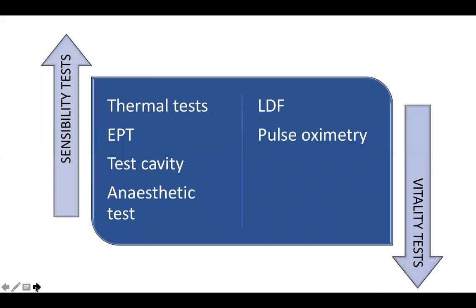To assess the status of the pulp, we use different types of tests, categorized as sensibility tests and vitality tests. Sensibility tests assess the status of the nerve fibers within the pulp and indirectly give an indication of the condition of the pulp. These include thermal tests, the electric pulp test, test cavity and the anesthetic test. Vitality tests measure the pulpal blood flow or oxygen saturation levels, and the two most famous are laser Doppler flowmetry and pulse oximetry.